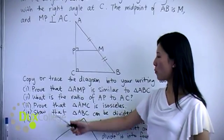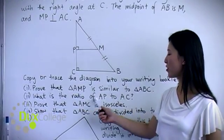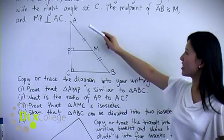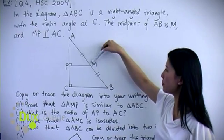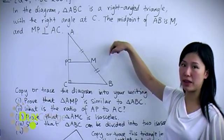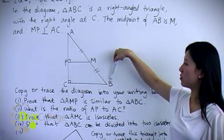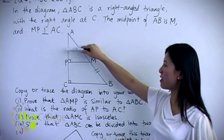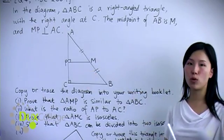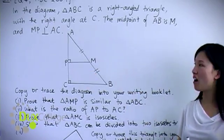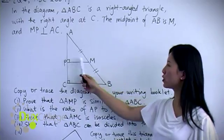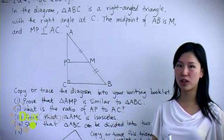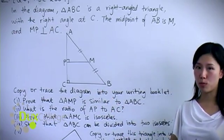For part two, we need to find the ratio of AP to AC. AM to AB equals one half, so AP to AC would also equal one half, because corresponding sides of similar triangles are proportional.